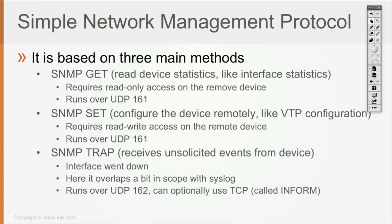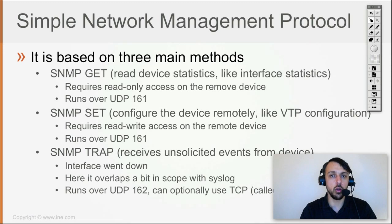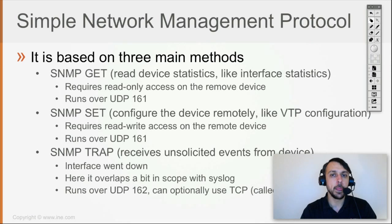Why would you want to run traps over TCP, which is called an inform? For the same reason as with syslog: if the agent has to urgently signal to the manager that something happened, you would want the manager to be able to acknowledge receipt of the message. TCP ensures all packets were received via its built-in acknowledgement system. Otherwise, using UDP, it could happen that the agent sent the trap but it never reached the manager because of network problems.